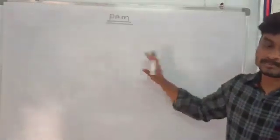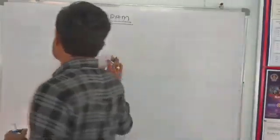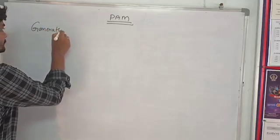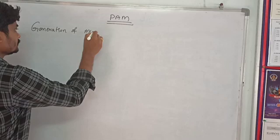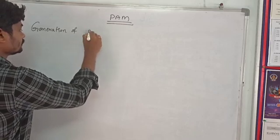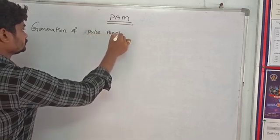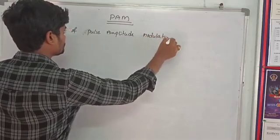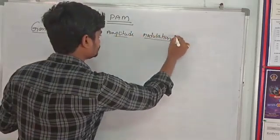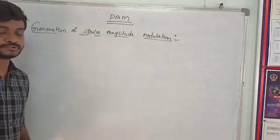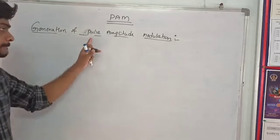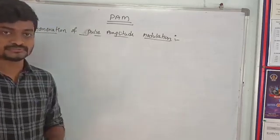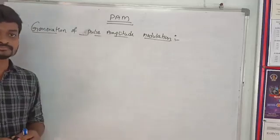This is the simple type of Pulse Modulation. The definition of Pulse Amplitude Modulation: the amplitude of the pulse changes with respect to the amplitude of the message signal, and the width and position are kept constant. That is the condition for Pulse Amplitude Modulation.